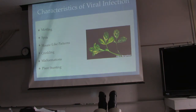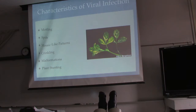Characteristics of viral infection include mottling, spots, and a mosaic-like pattern — it looks like paint was splattered, like a Pollock painting. There's also crinkling, malformations, and plant stunting.